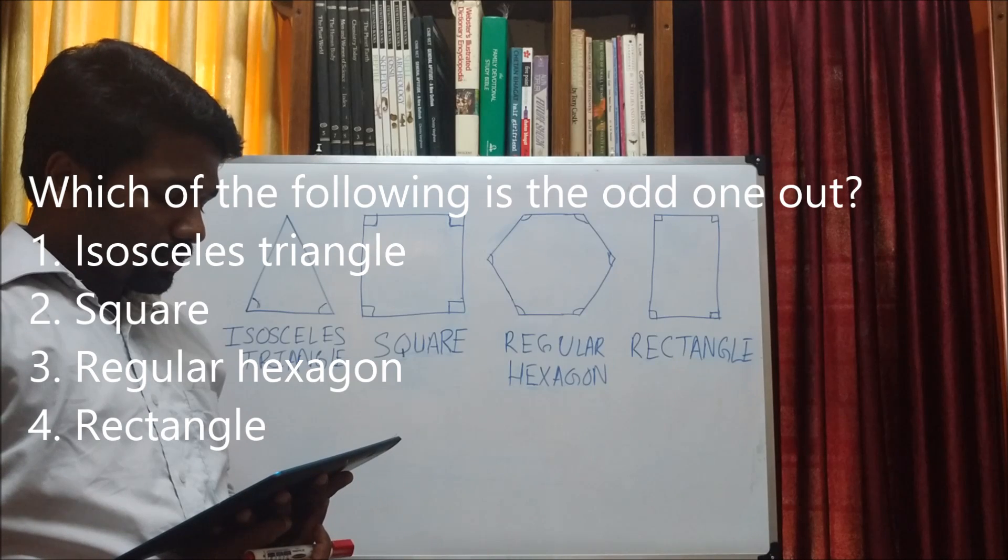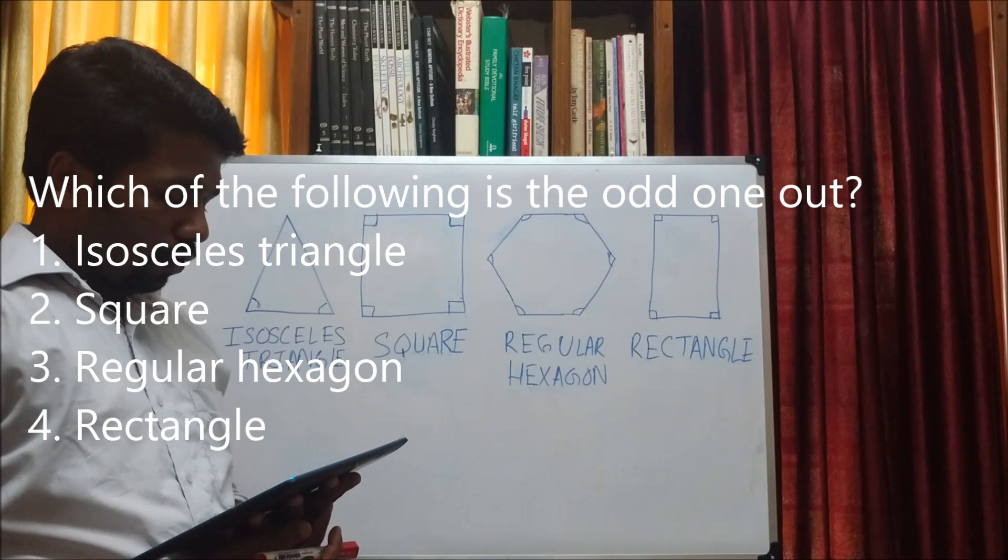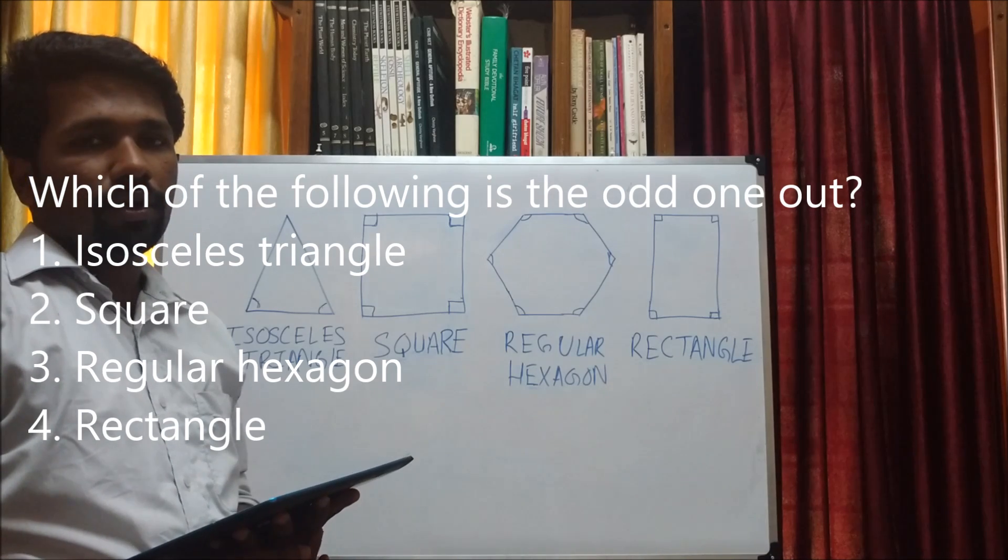Option one: isosceles triangle. Option two: square. Option three: regular hexagon. And option four: rectangle.